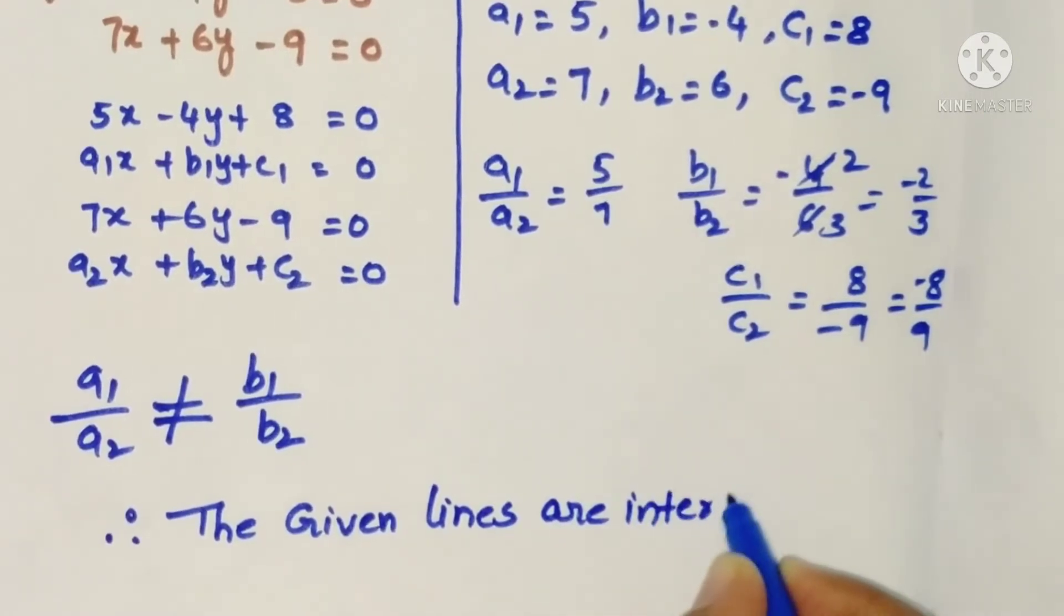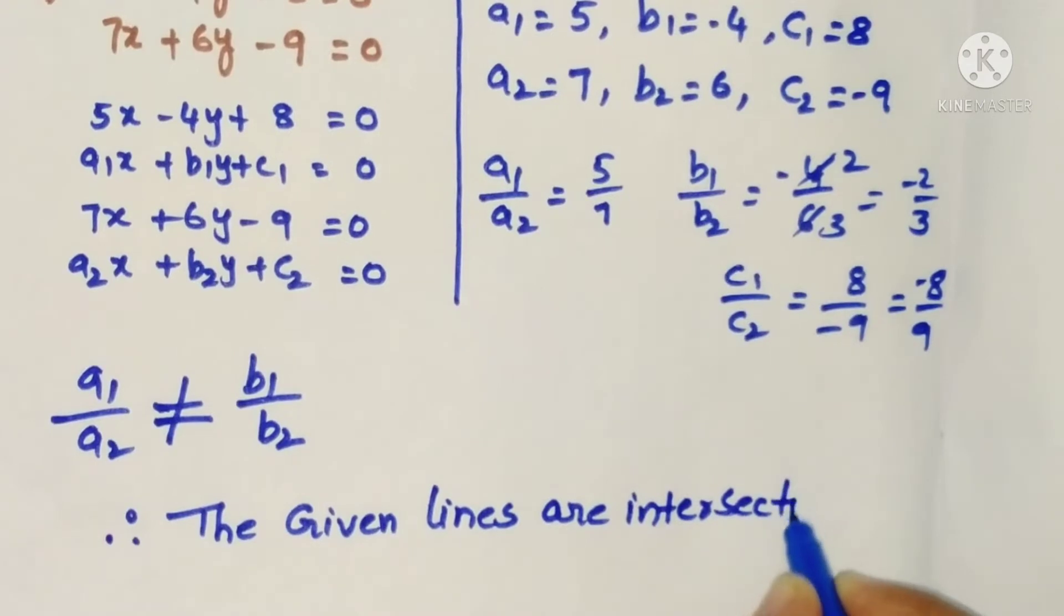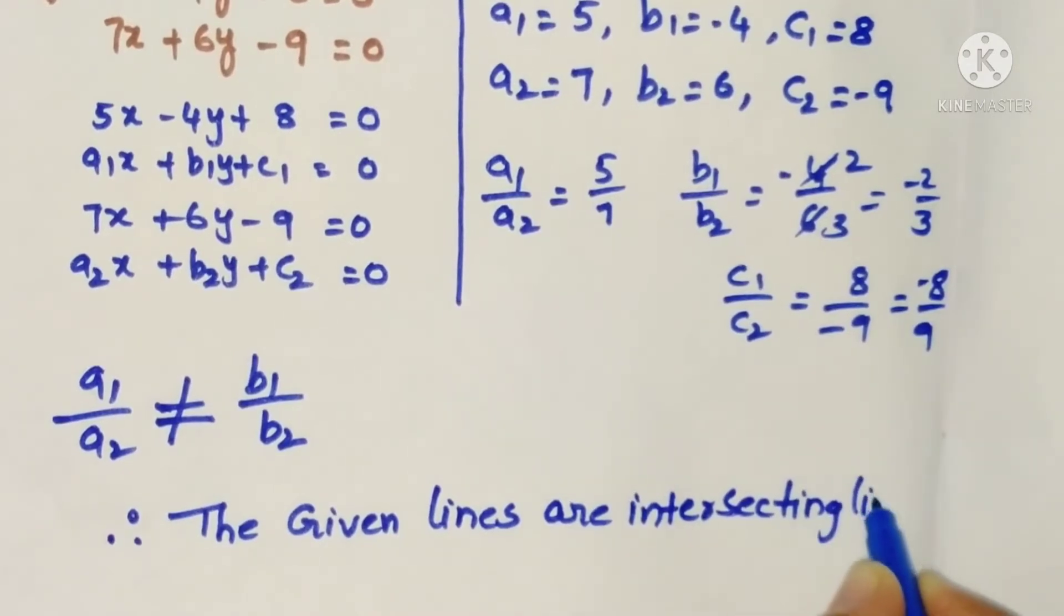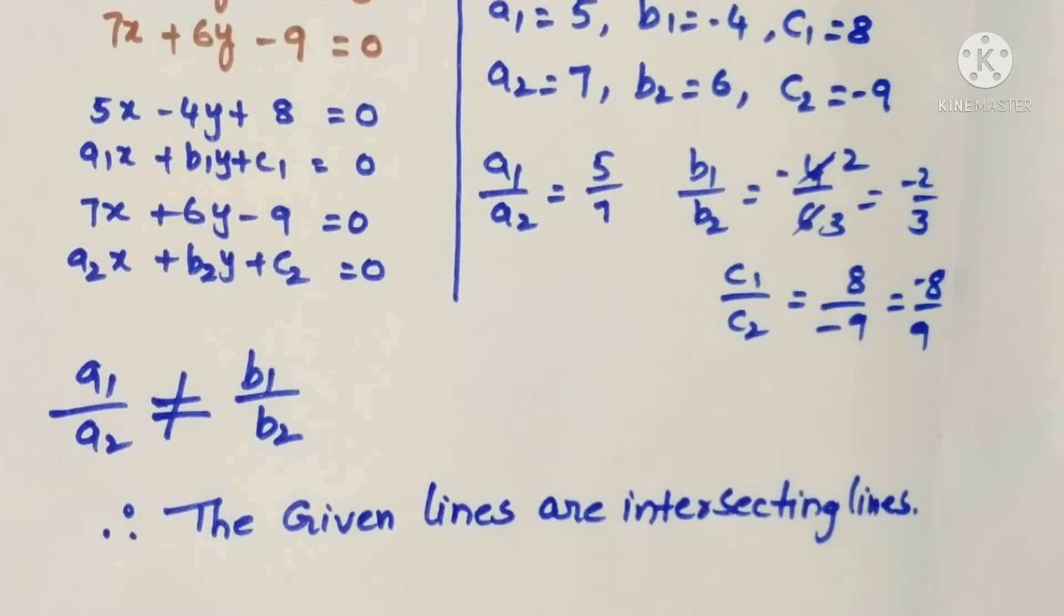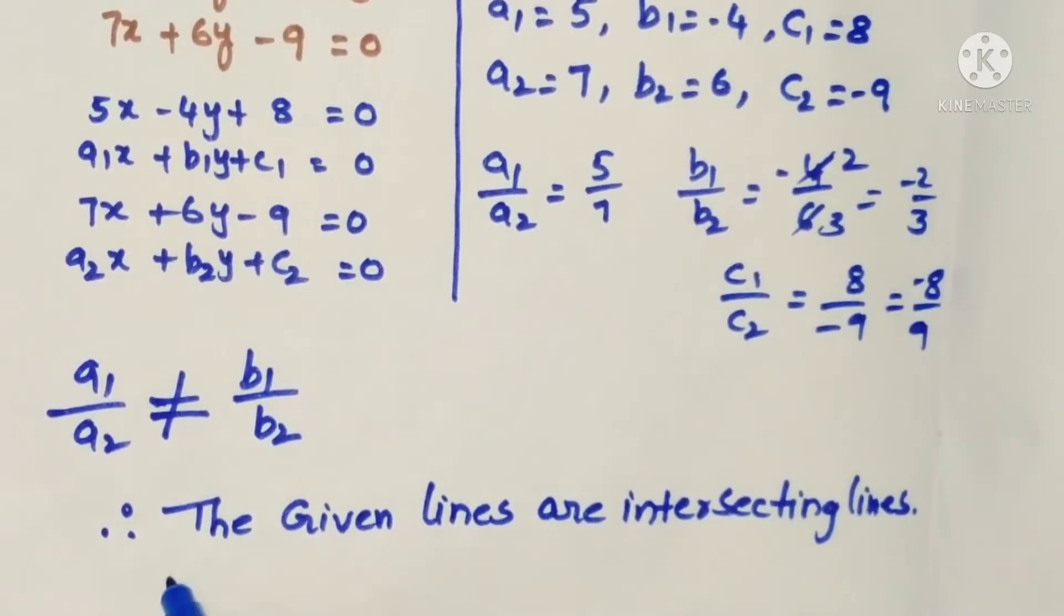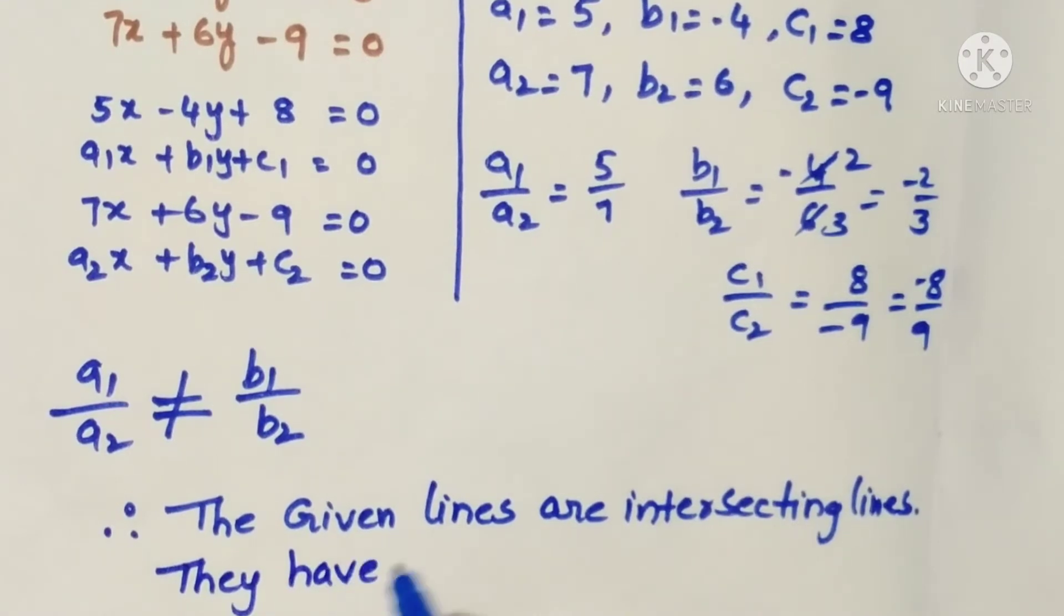If a1 by a2 is not equal to b1 by b2, the two lines are intersecting lines. And they are consistent also. Intersecting lines means they have only one solution.